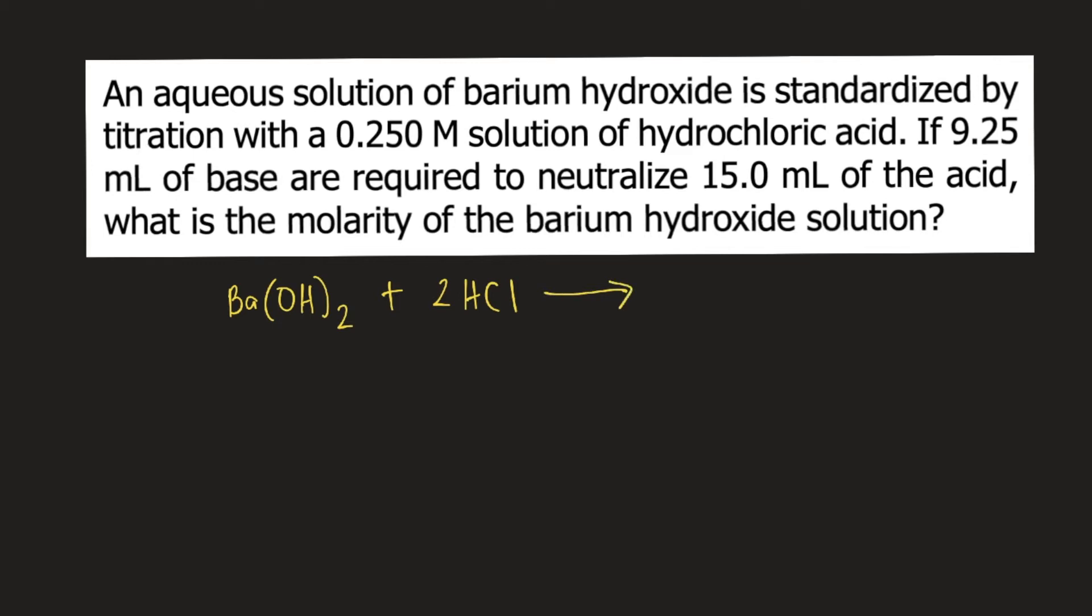We have barium hydroxide plus 2HCl forming barium chloride plus 2H₂O. The problem says you have 15 mL of the acid solution. You need to convert this first into liters. We know that 1,000 mL is equivalent to 1 liter.